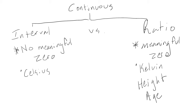There are two types of continuous variables: interval and ratio. Interval variables do not have a meaningful zero. Ratio variables do. For example, temperature in degrees Celsius is an interval variable. A temperature of zero degrees Celsius does not mean there is no temperature. Temperature in degrees Kelvin is a ratio variable because the value zero means there is no temperature. Other examples of ratio variables include age and height.